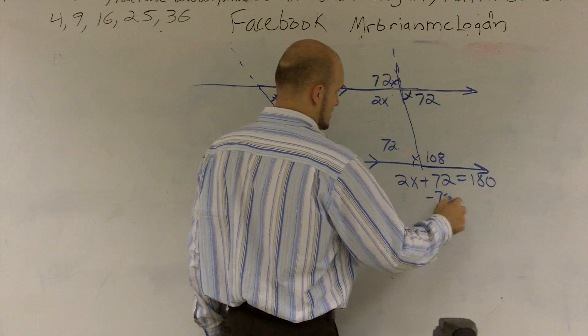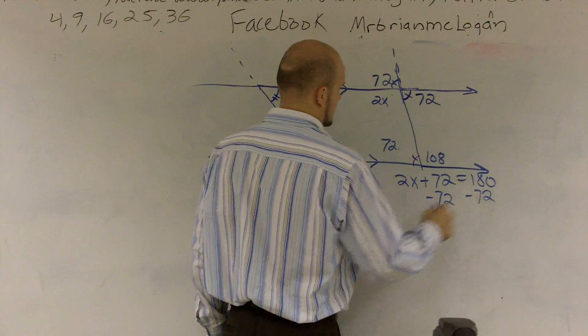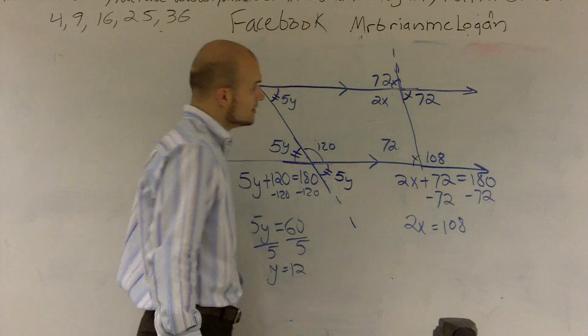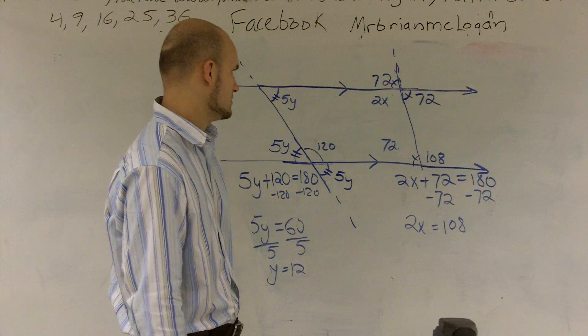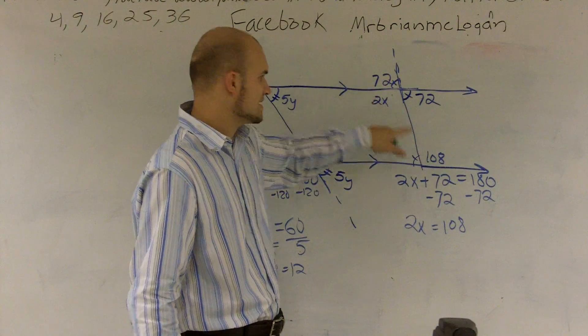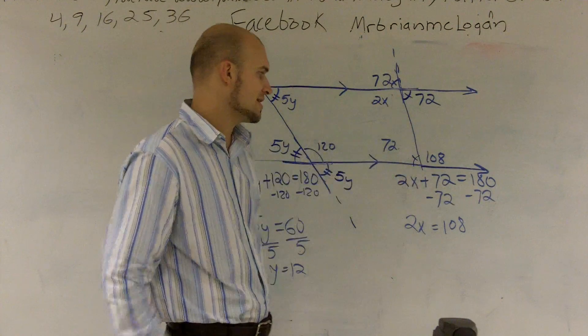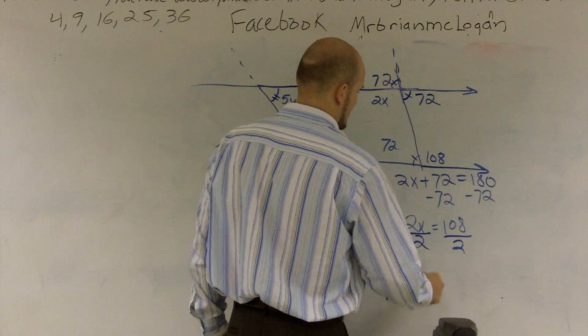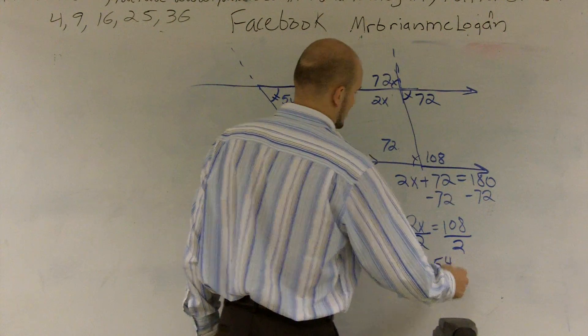Over here, I subtract 72. 2x equals 108. And you also could have determined that these are alternate interior angles. So you could have said 2x equals 108 by alternate interior angles. That would have worked. Divide by 2, x equals 54.